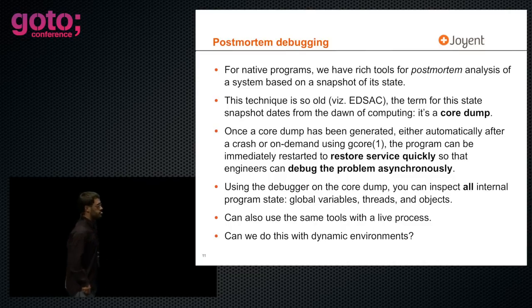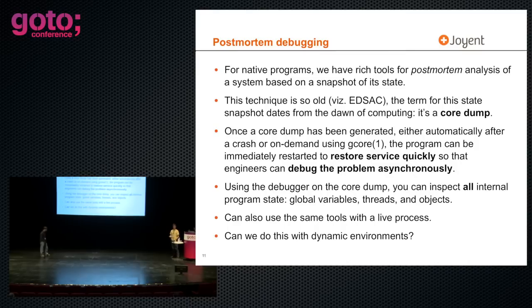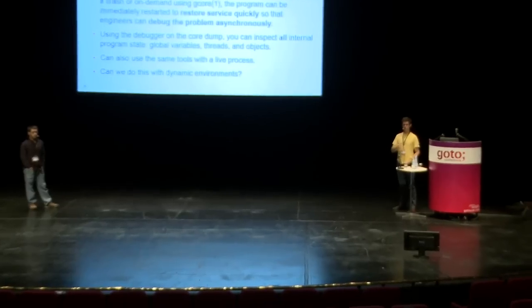This is called forensic engineering in other domains. Forensic engineering is what allows us to deliver life-critical, safety-critical systems. Look at aviation — there are only four unsolved plane crashes in the United States. All four predate the flight data recorder and cockpit voice recorder. Literally every other major aviation accident since the 60s has been root-caused. As a result, the airliners no longer crash. It's because we've been able to do forensic engineering. Forensic engineering is critical to all engineering domains, not just software.